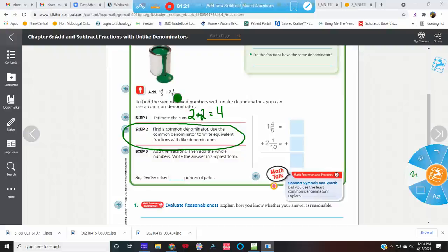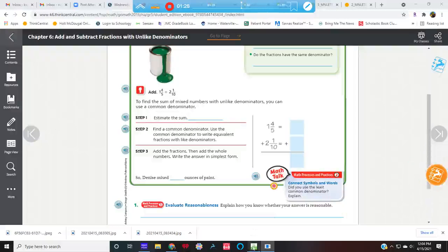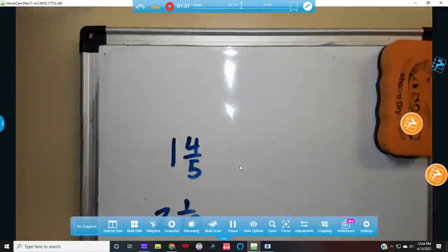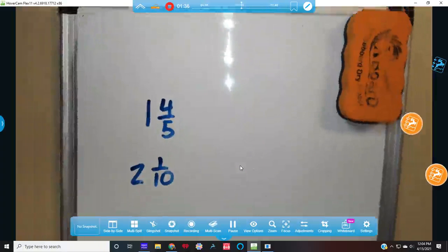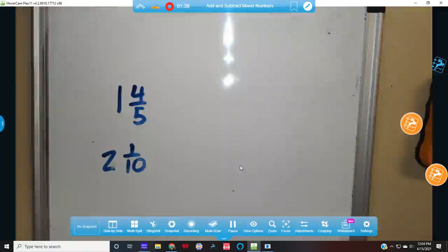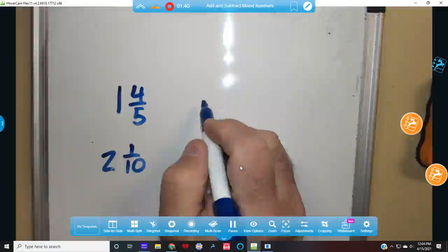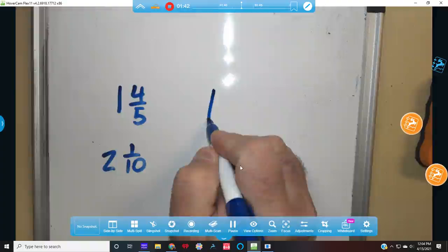And we'll go over it here. So I have 1 and 4 fifths plus 2 and 1 tenth. Let's clear this baby out. So I have 1 and 4 fifths and I have 2 and 1 tenth. I need a common denominator, so I need to figure this out.